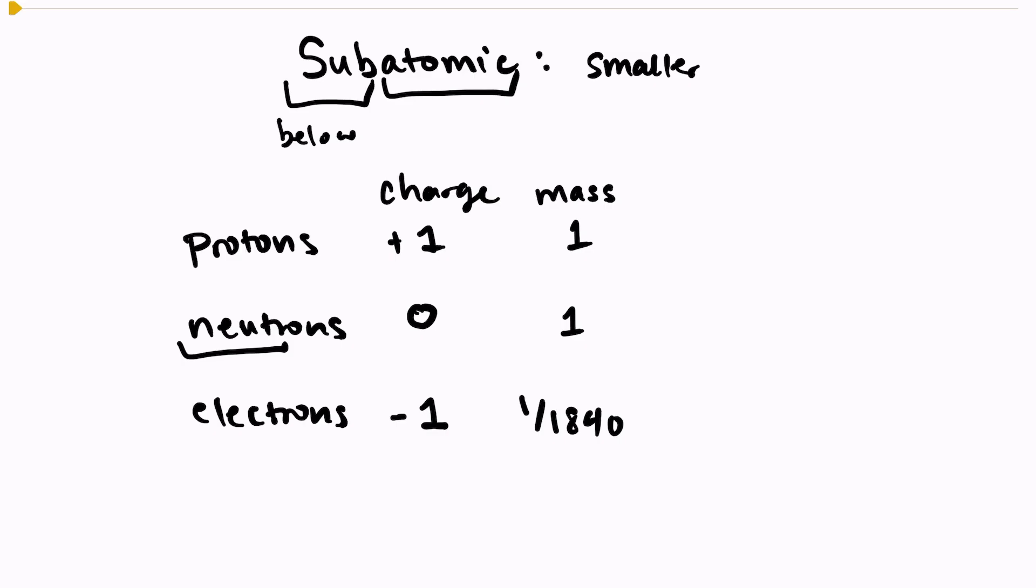So the mass of an atom comes from the protons and the neutrons. We do not add the mass of an electron into the overall mass of the atom. The last thing we need to look at is the location of the subatomic particles.